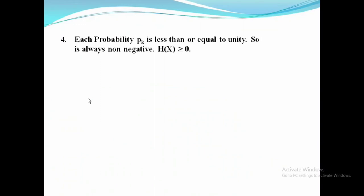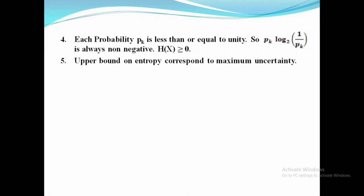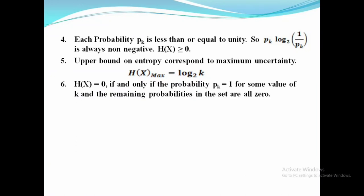Fourth property: since probability PK is less than or equal to 1, PK · log base 2 of (1/PK) is always non-negative, hence H(X) is always greater than or equal to 0. The upper bound on entropy corresponds to maximum uncertainty, with H(X) maximum = log base 2 of K. Also, H(X) = 0 if and only if PK = 1 for some value of K, with all remaining probabilities in the set equal to 0.